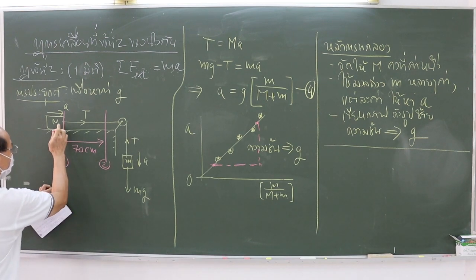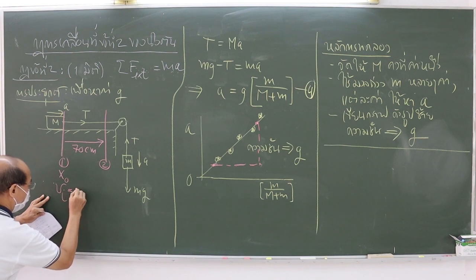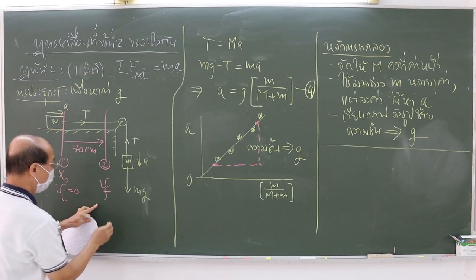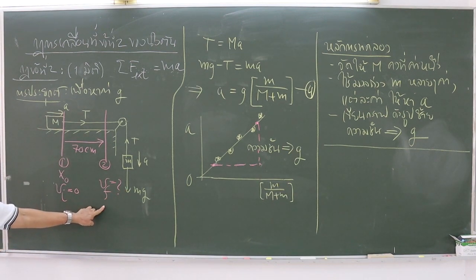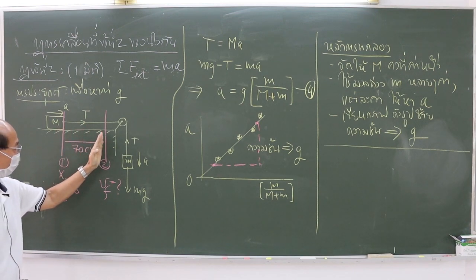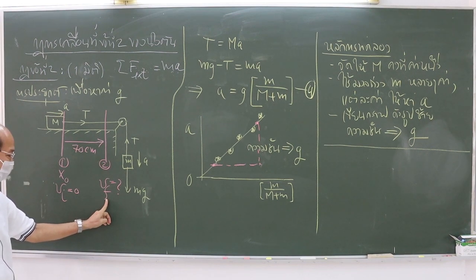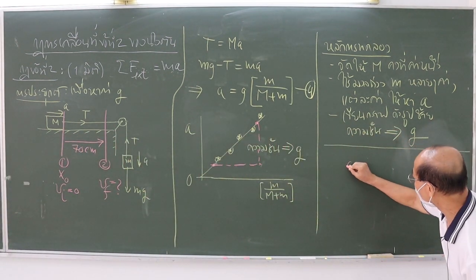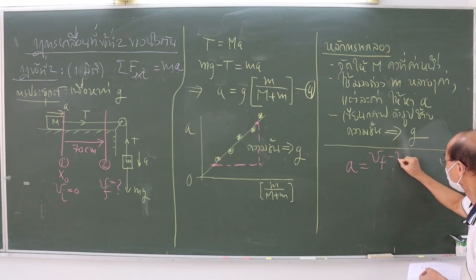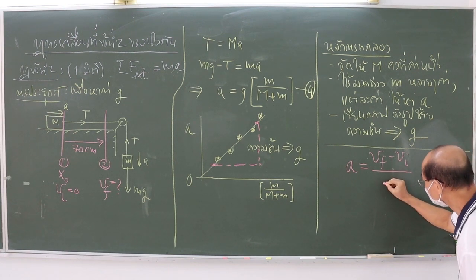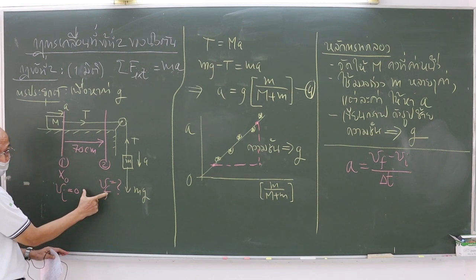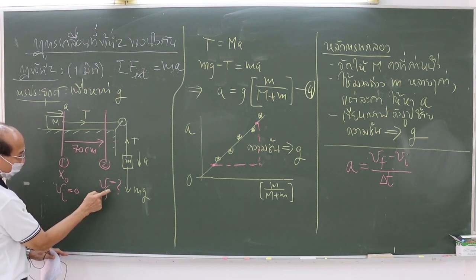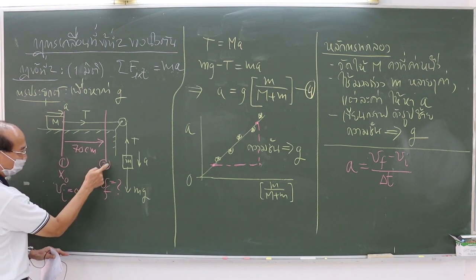We use a timer. First, we have to measure the speeds at positions 1 and 2. The speed at position 1, let's call it V_i, is 0 because it starts from rest. Next, we measure the speed at position 2, let's call it V_f. We use the definition of acceleration, which is V_f minus V_i divided by delta T, where delta T is the time the object moves from the initial point to the final point. So we can determine the acceleration A.